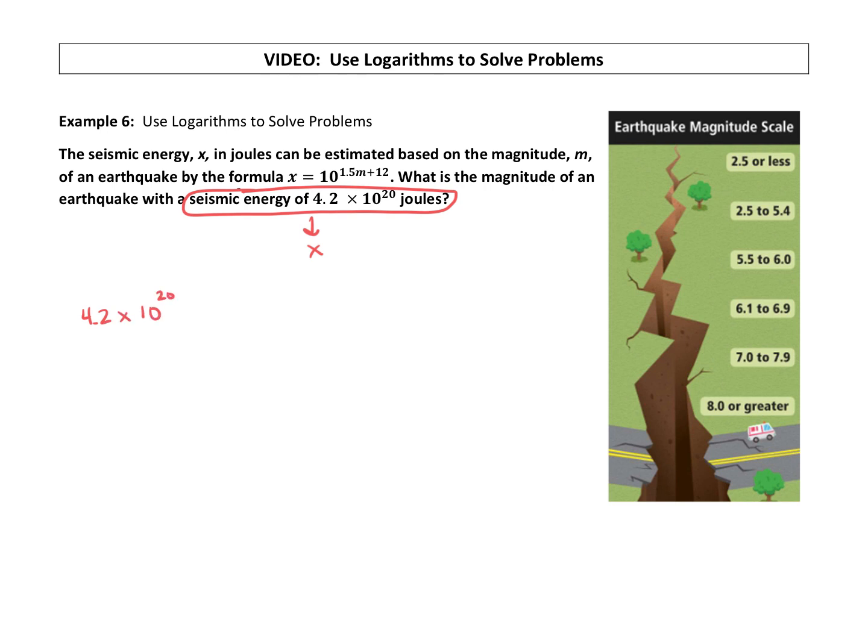So that's just scientific notation. That's a really big number. If you were to put this into what we call standard form to get out of scientific notation, you would take this decimal and you would move it 20 spots to the right, making this a really, really, really big number.